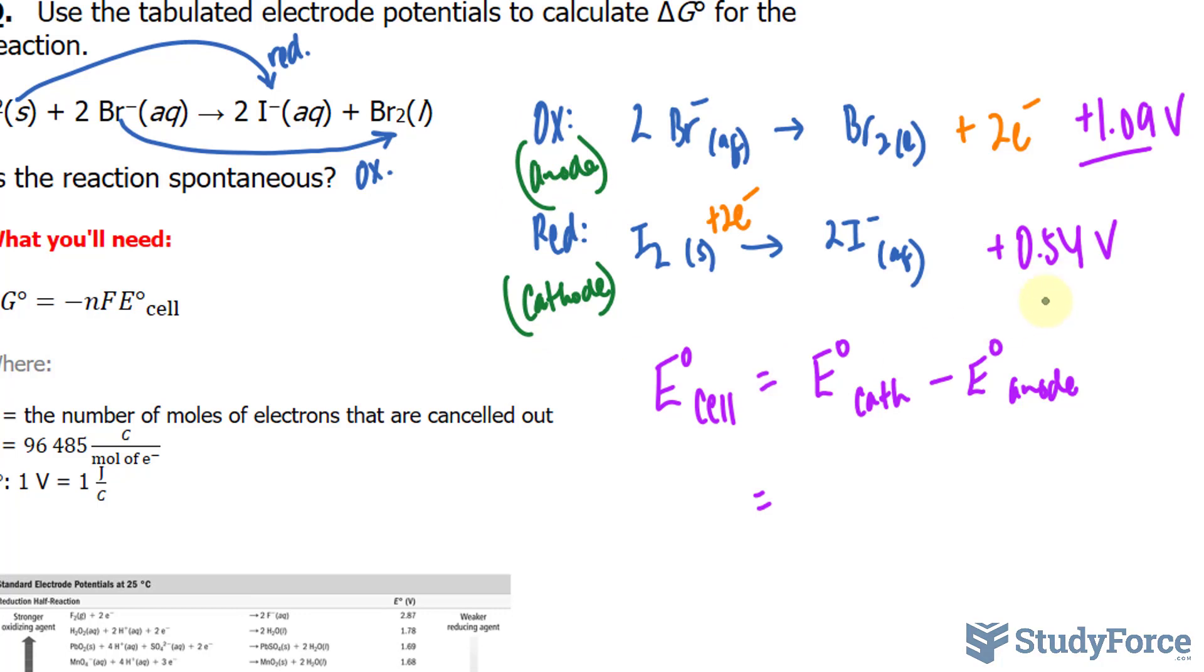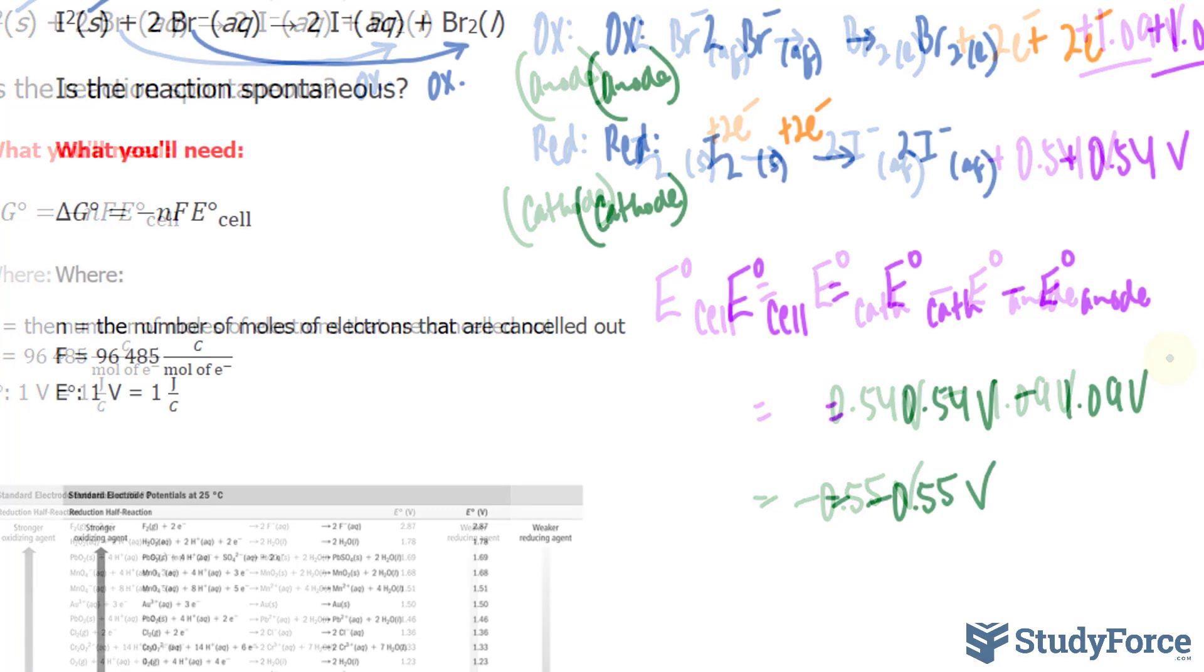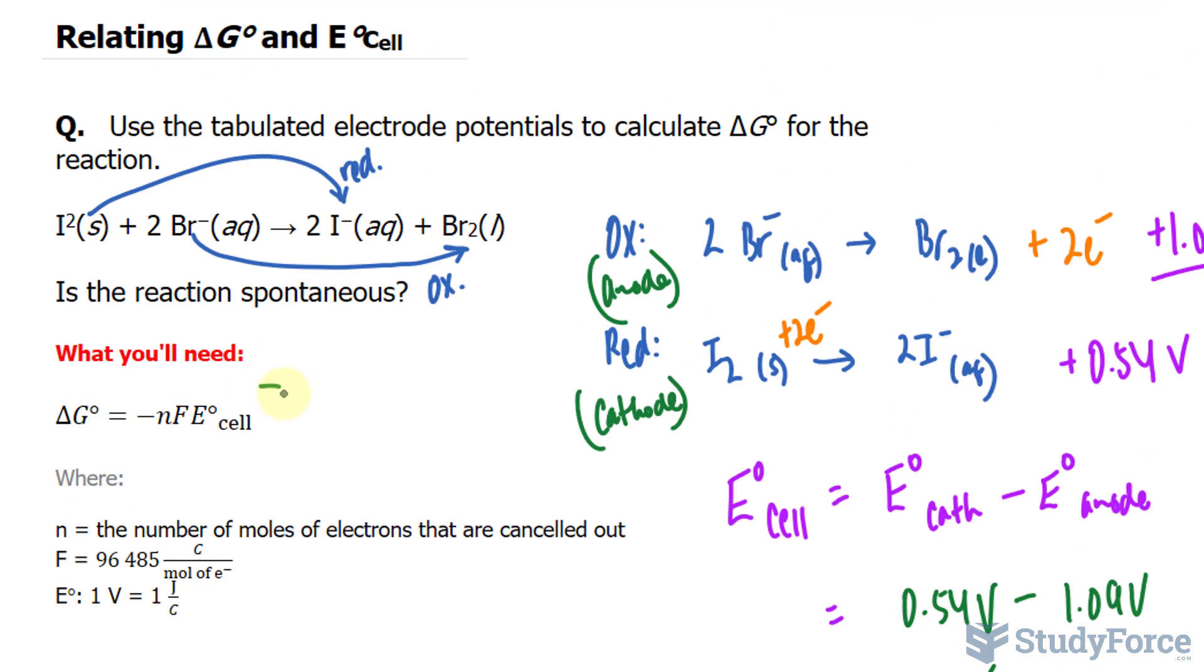At the cathode, we had 0.54 as its standard electrode potential minus 1.09 volts. Subtracting these two numbers out, you should end up with -0.55. That represents the standard cell potential for this reaction. To tell if this is spontaneous or not, we'll need to use the relationship shown here.